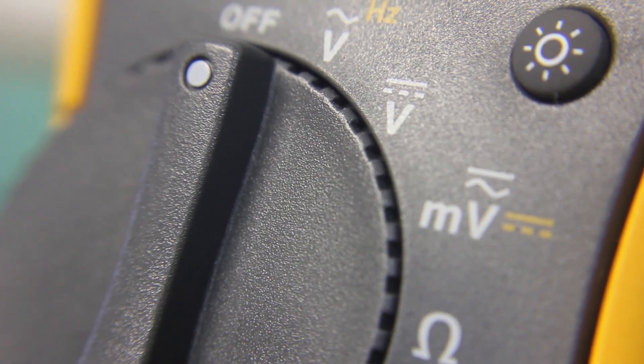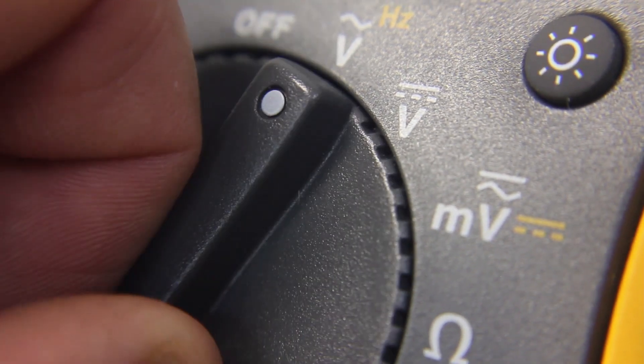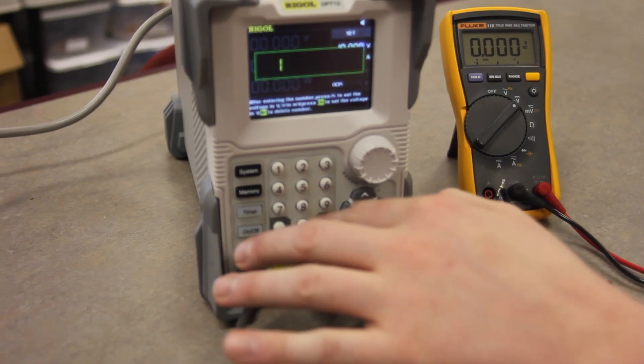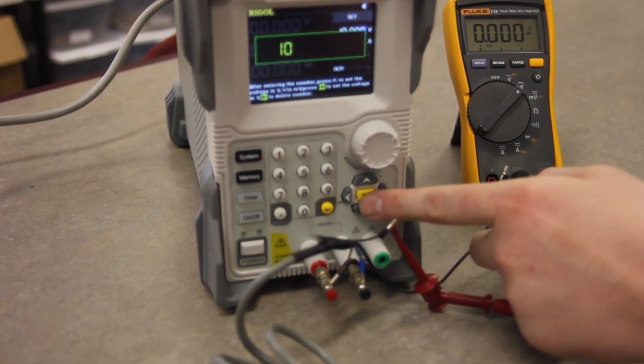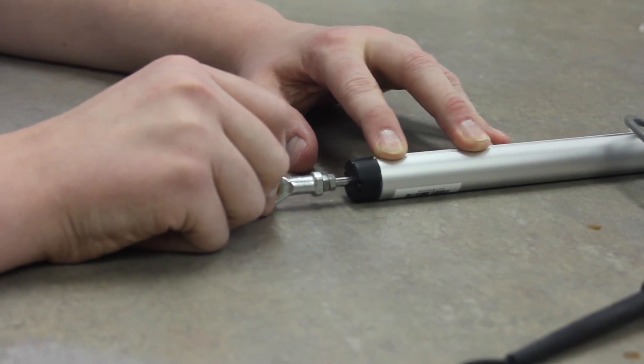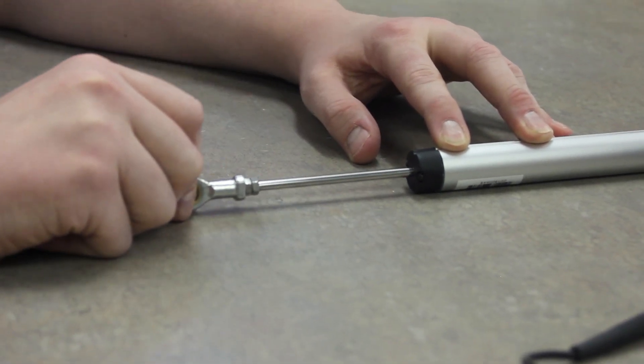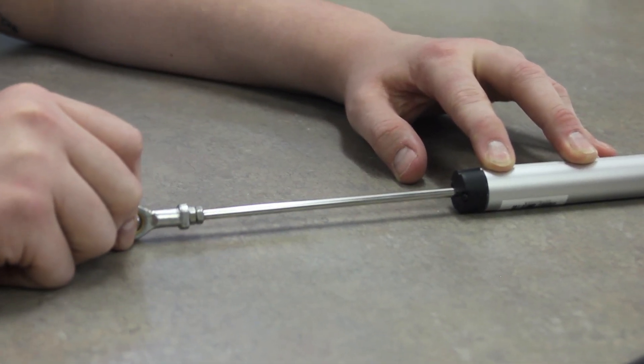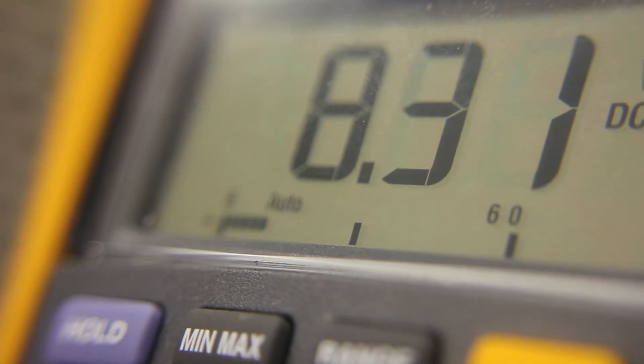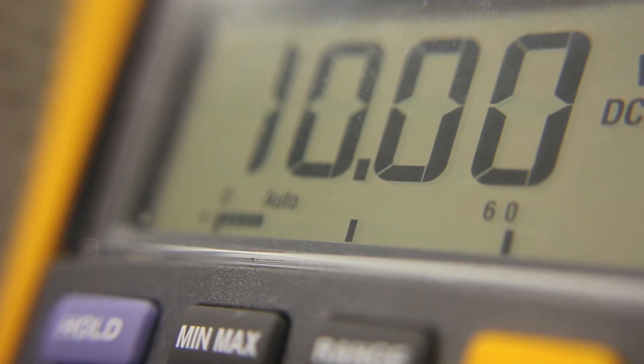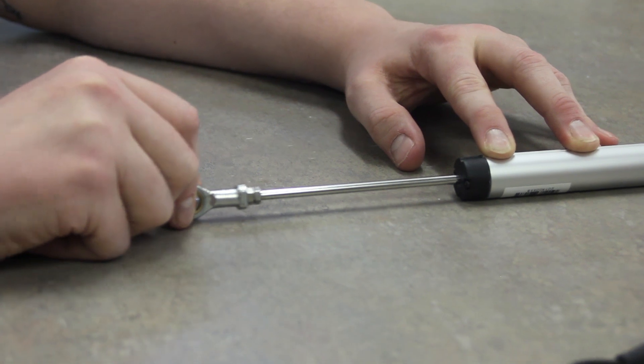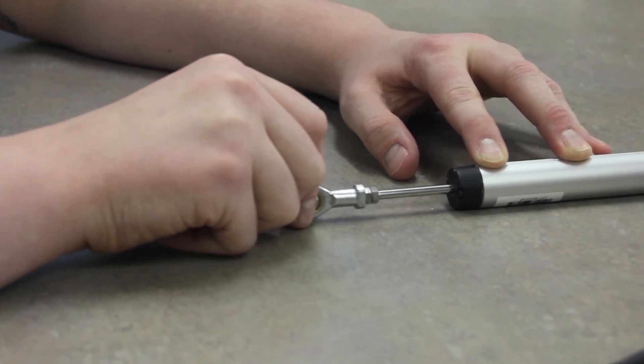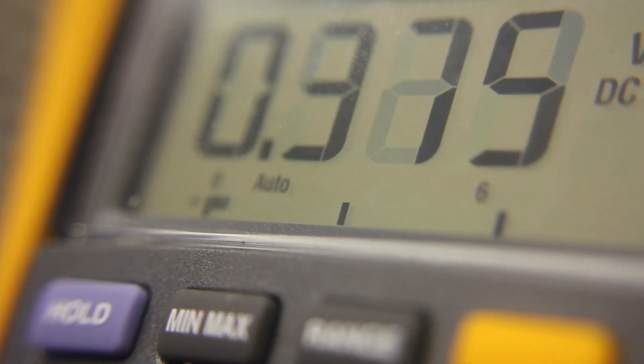Set the voltmeter to measure DC voltage. Set the DC power supply to 10 volts DC. With the linear potentiometer fully extended, the voltmeter should display 10 volts DC. With the linear potentiometer fully retracted, the voltmeter should display 0 volts DC.